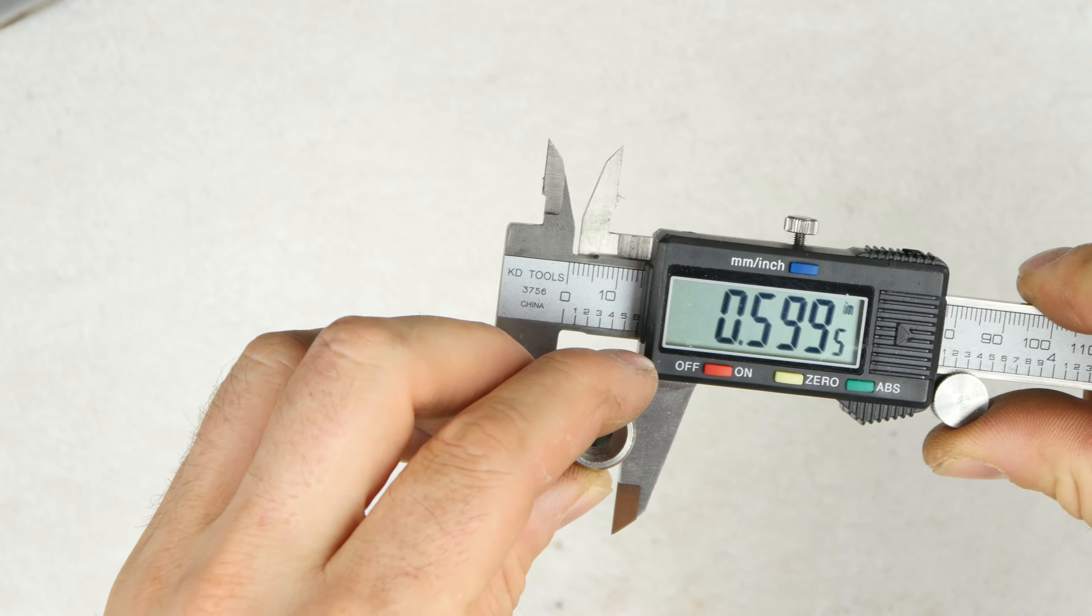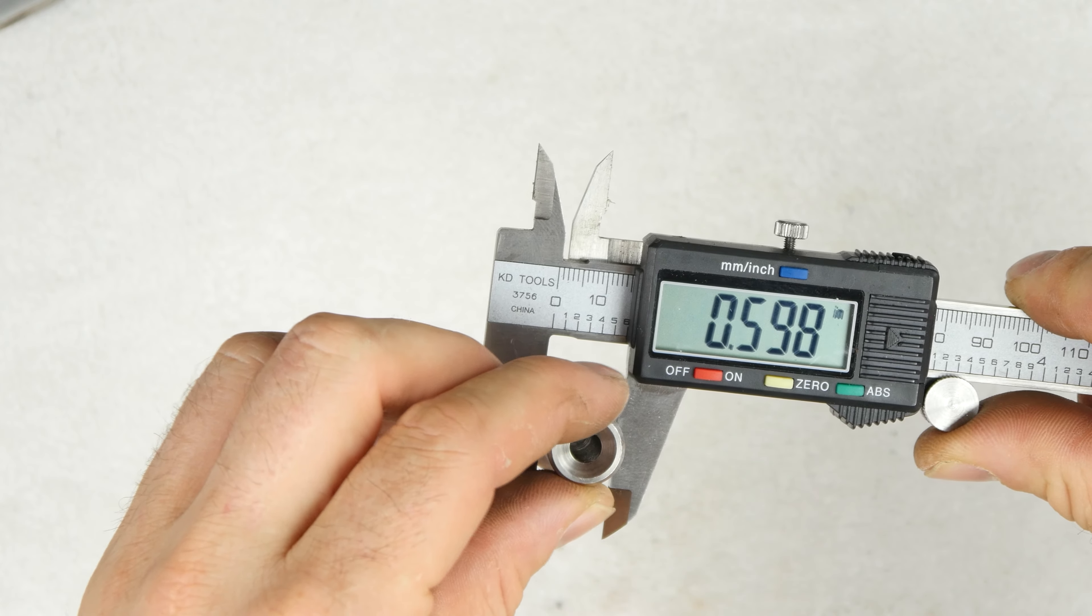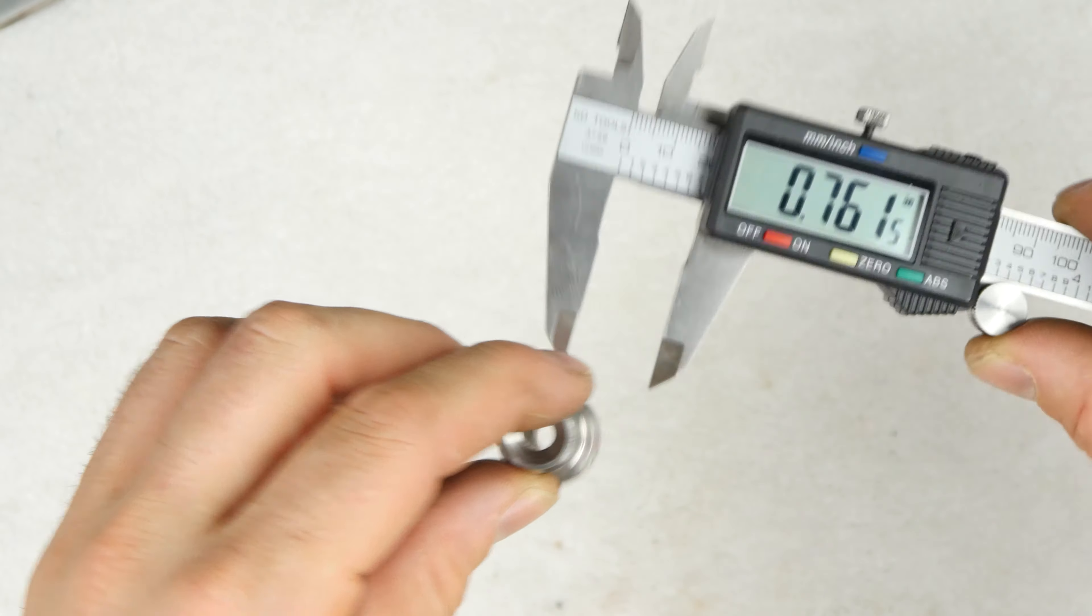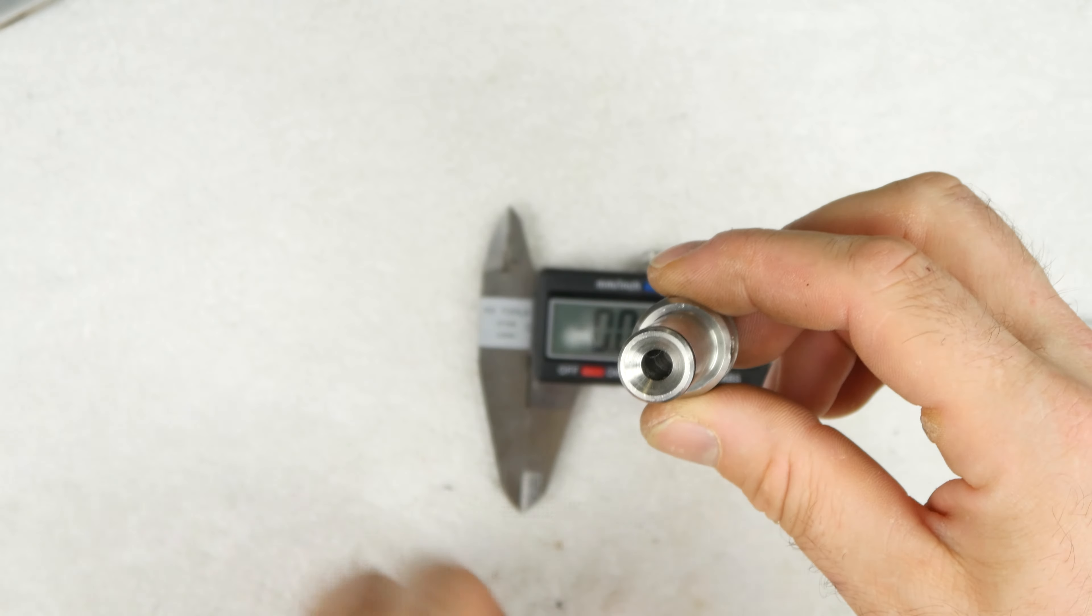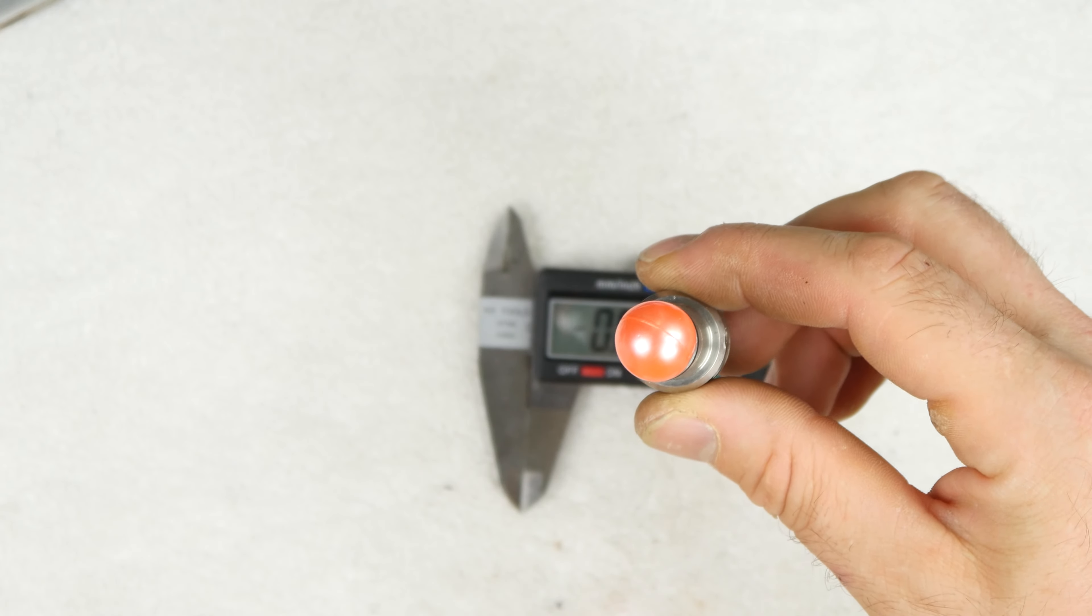When we measure it, it's .598 inches, which means that it's for a .62 caliber paintball.